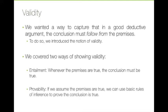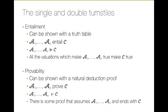We've covered two ways of showing validity. Entailment is the idea that when the premises are true, the conclusion must be true. Provability is the idea that if we assume the premises are true, we can use some basic rules of inference to prove that the conclusion must also be true. These should already sound quite similar, but let's consider in more detail these two ways of defining what it means for a conclusion to follow from some premises.